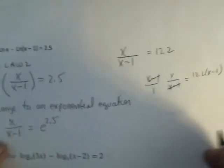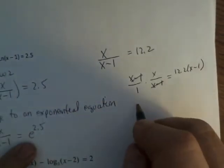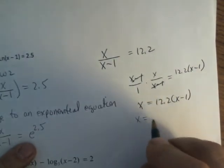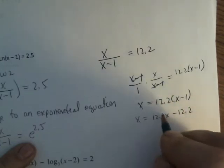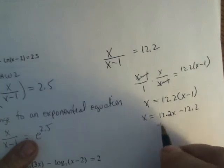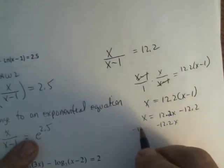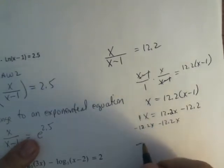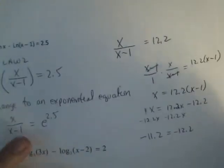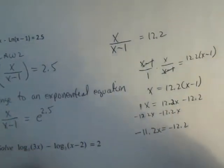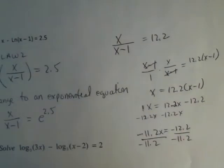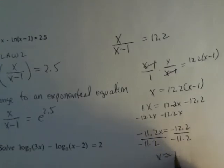So, these cancel. So, I'm left with x equals 12.2 times x minus 1. Go ahead and distribute. I mean, I know it looks bad because you got decimals. But decimals are numbers, too. Now, I'm going to subtract 12.2x from both sides. So, this is like 1. So, 1 minus 12.2 is negative 11.2x is negative 12.2. Divide both sides by negative 11.2. And I get x is roughly 1.1.